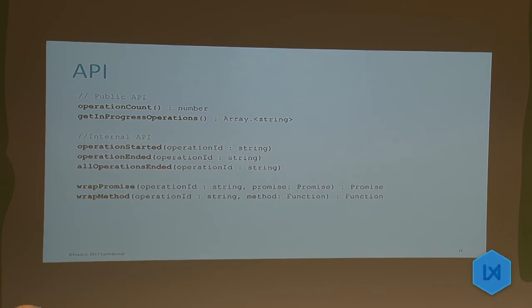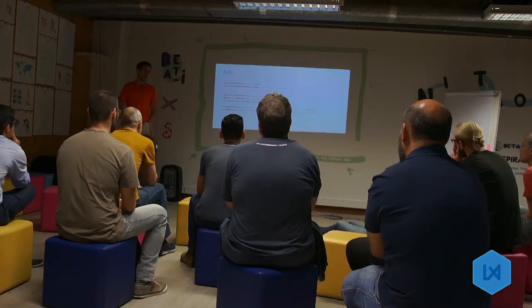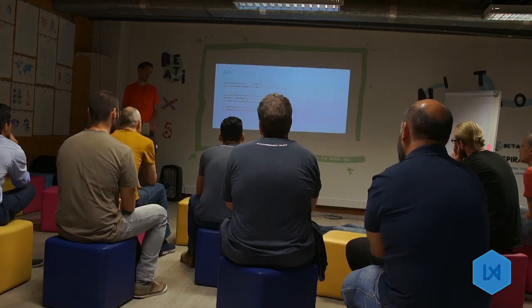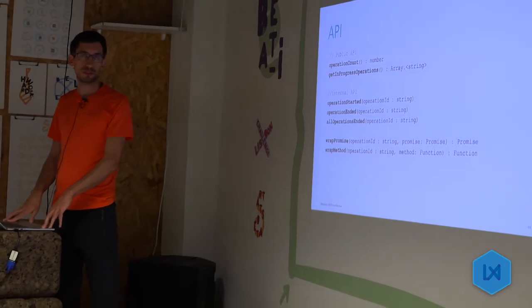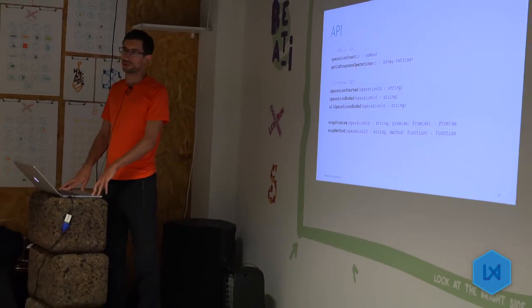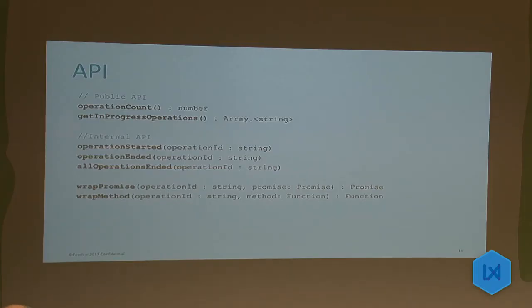The API is actually very simple and even the implementation is very simple. We have an operation count method that allows Selenium to know how many operations are ongoing and wait until the operations reach zero — that is the state where we want to interact with the application. We also have, for debug purposes, a method that allows us to see which operations are ongoing — useful if we have a timeout where an operation never ends and we want to know which operations are pending.